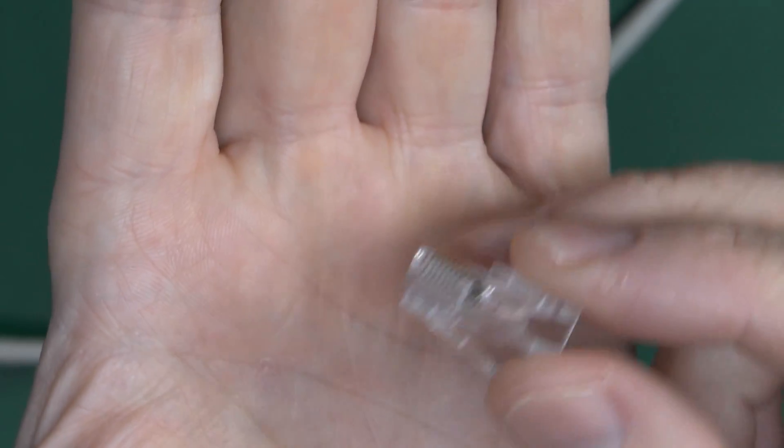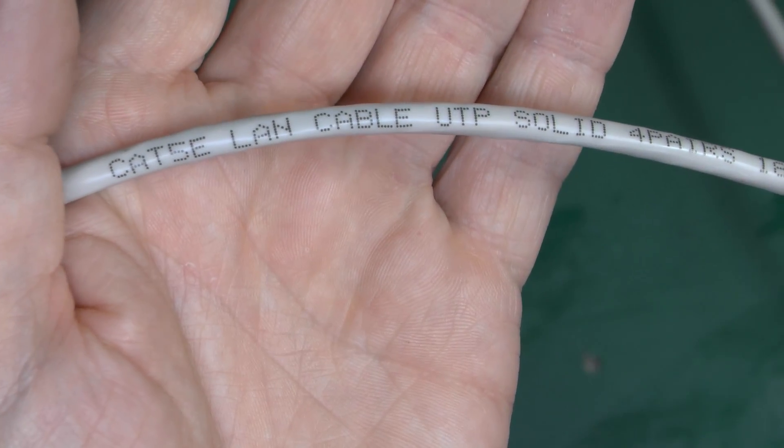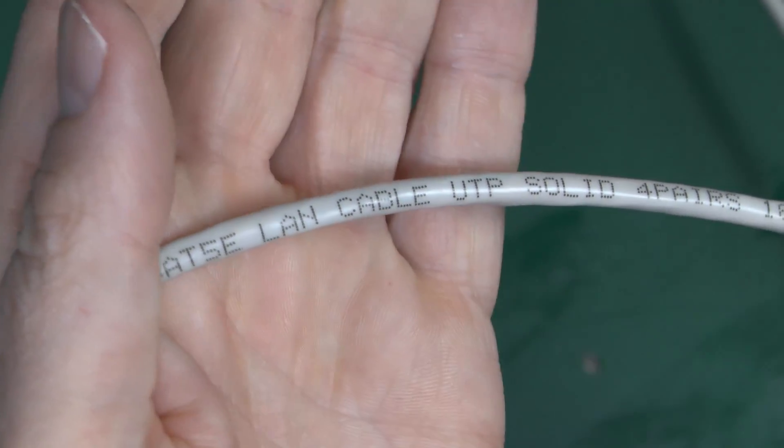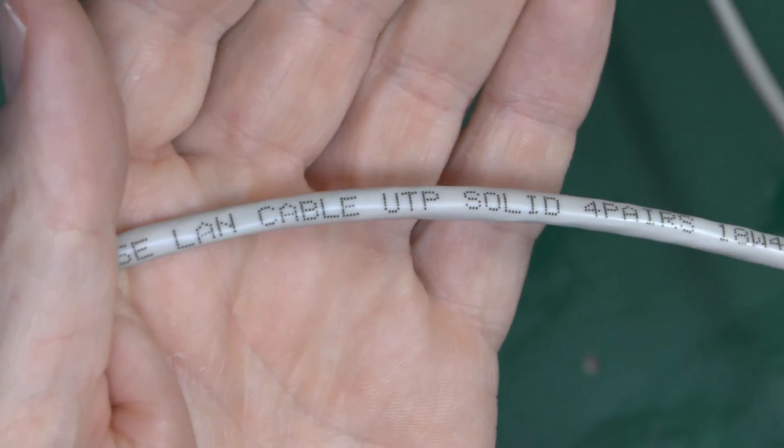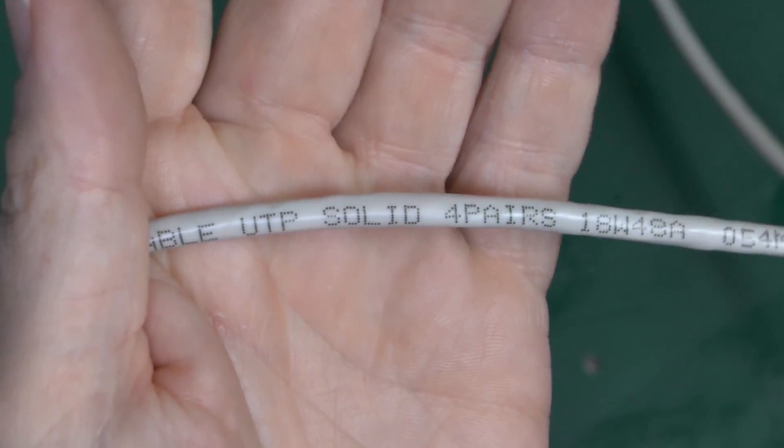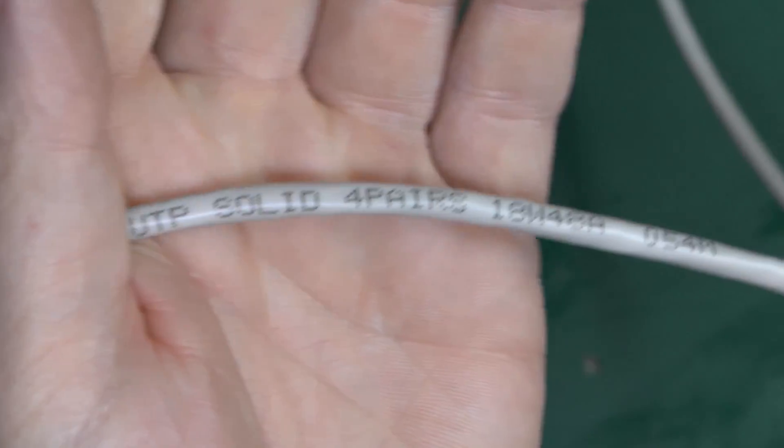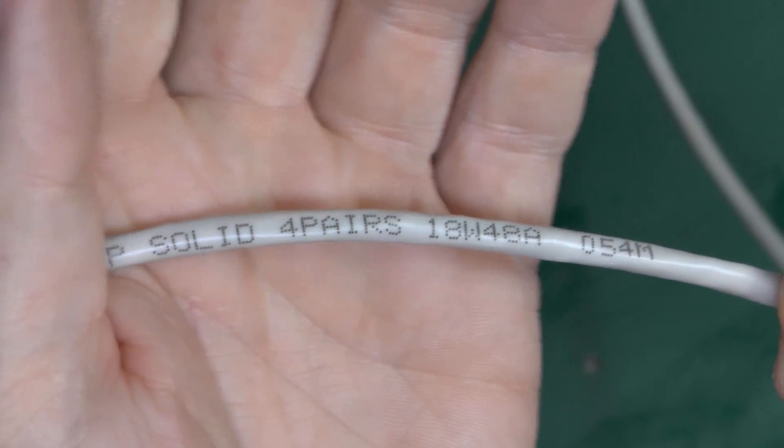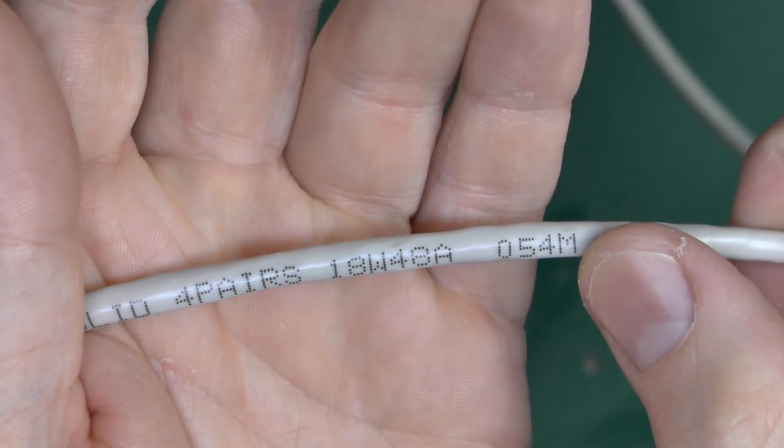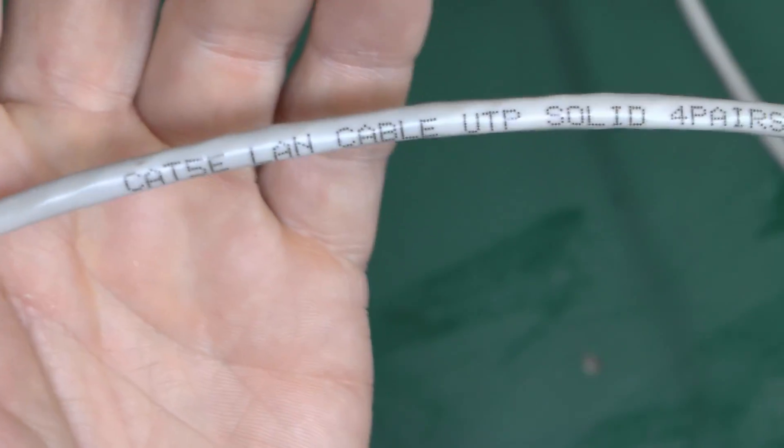Now here's some cable here, and this is category 5E. There's also a category 6, which is surprisingly similar but has some structural differences. There's also a LAN cable, and a UTP, which is unshielded twisted pair. There's also an FTP, which is a foiled twisted pair as well. And solid, because it's solid core. It's got 4 pairs inside. And this is the metre mark, which means we're 54m into this particular roll. Fairly commonly available stuff.